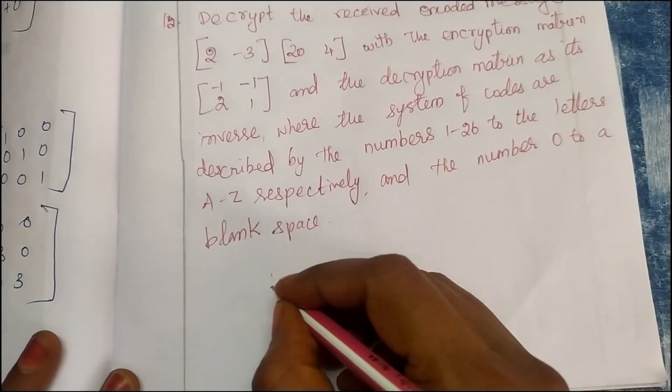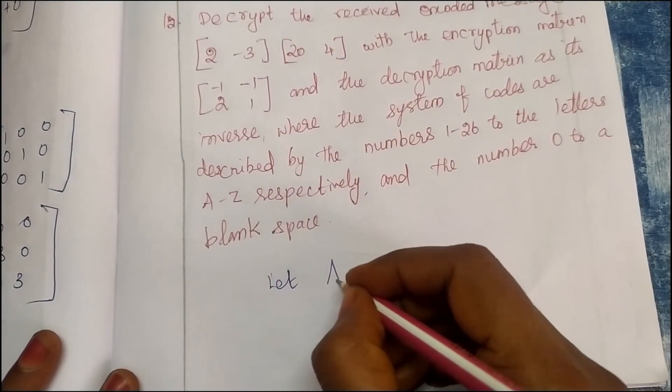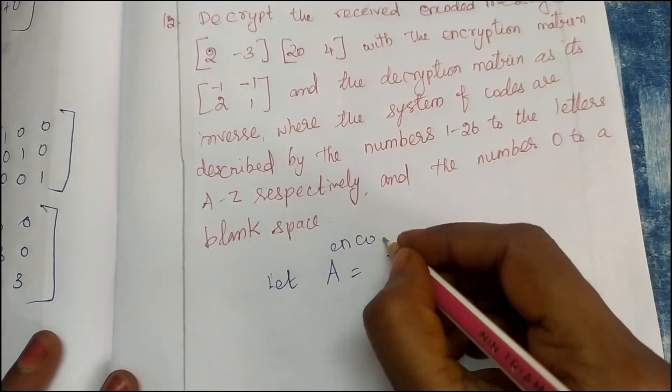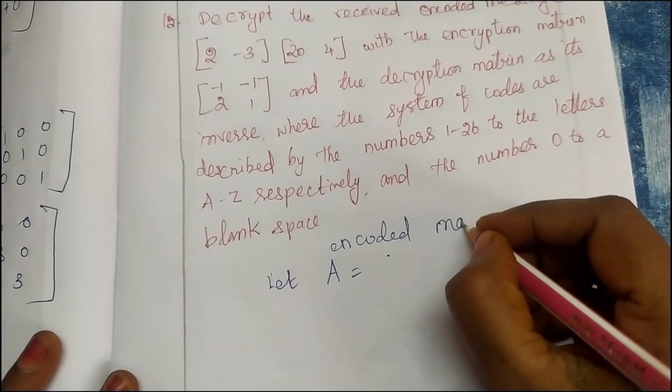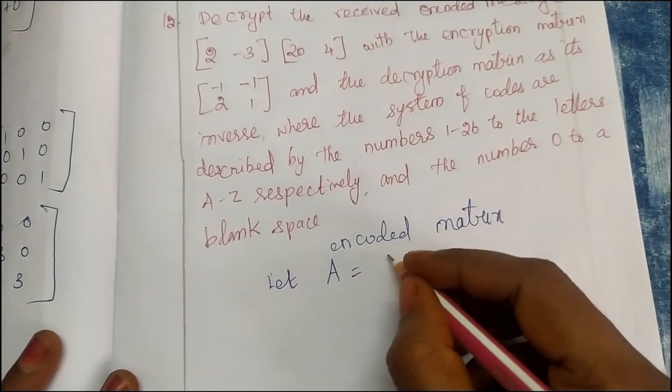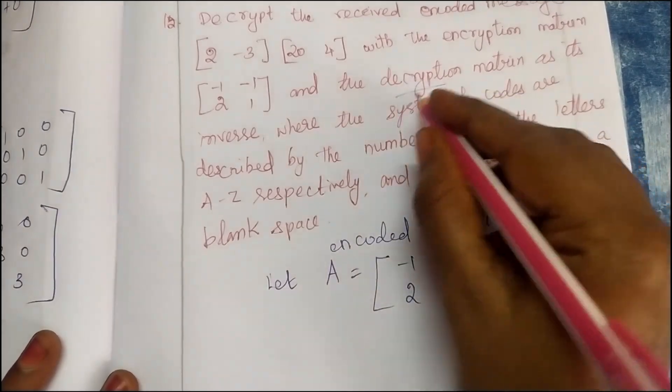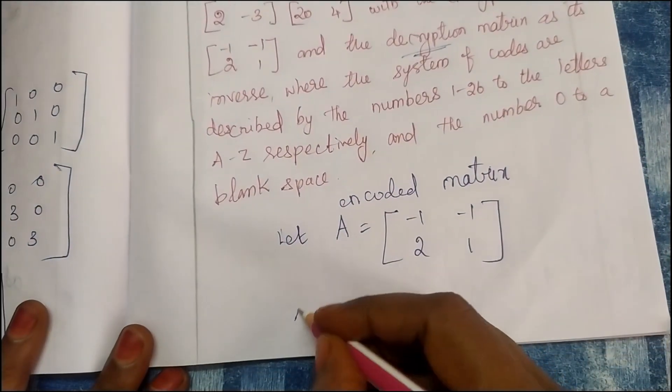Let us name it A equal to the encoder matrix. What do you say? Minus 1, minus 1, 2, 1. So decryption is inverse. You can invert.